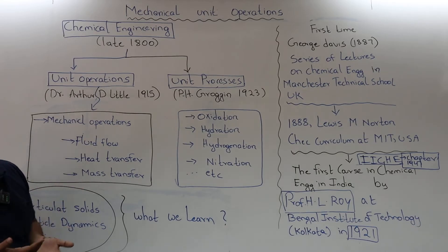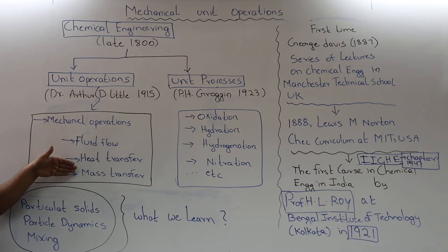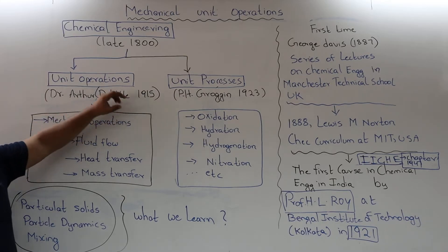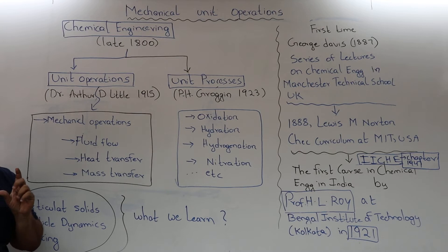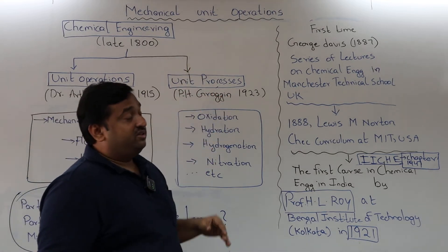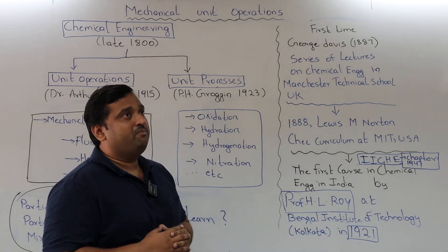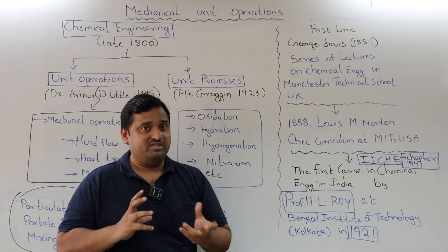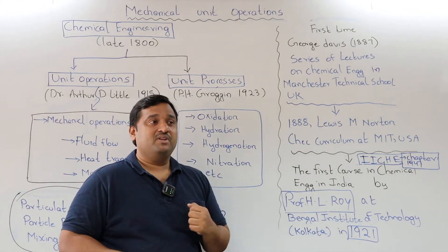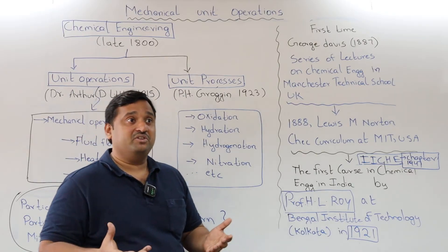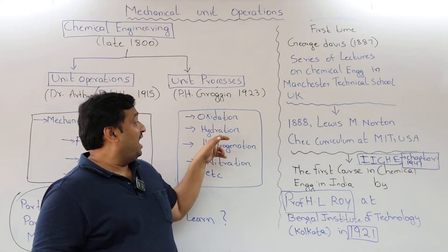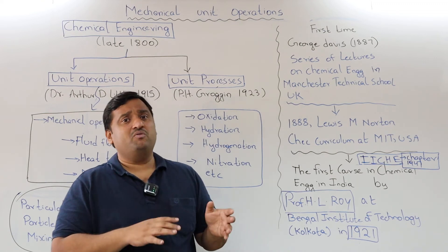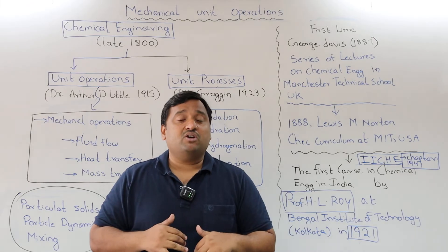In that book, the aspects covered include mechanical operations, fluid flow, heat transfer, and mass transfer. After the introduction by Dr. Arthur D. Little in 1915, we came to know what unit operations are. The person who defined the term 'unit processes' is P.H. Groggins in 1923. He coined the term 'unit processes,' where chemical changes happen — for example, oxidation reactions like C + O₂ → CO₂, hydration reactions, hydrogenation reactions, nitration, and other reaction types.